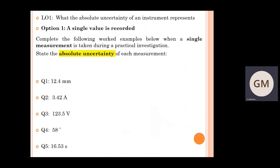Now let's do some more examples in relation to absolute uncertainty, whereby again single measurements are taken. Copy out the respective notes and questions one through to question five, and have a go at doing the questions yourself.